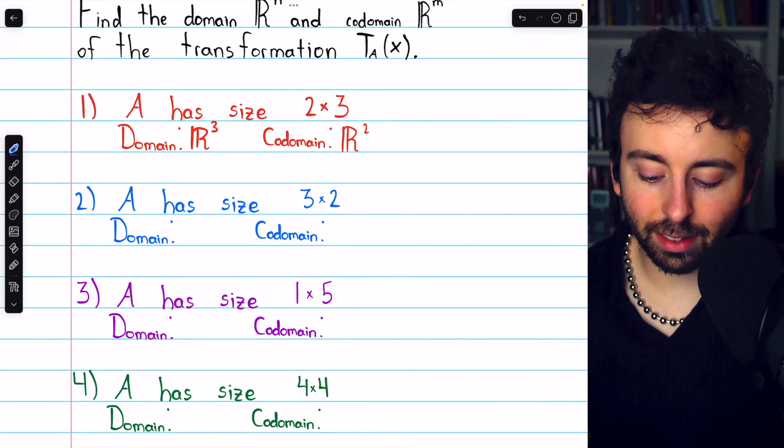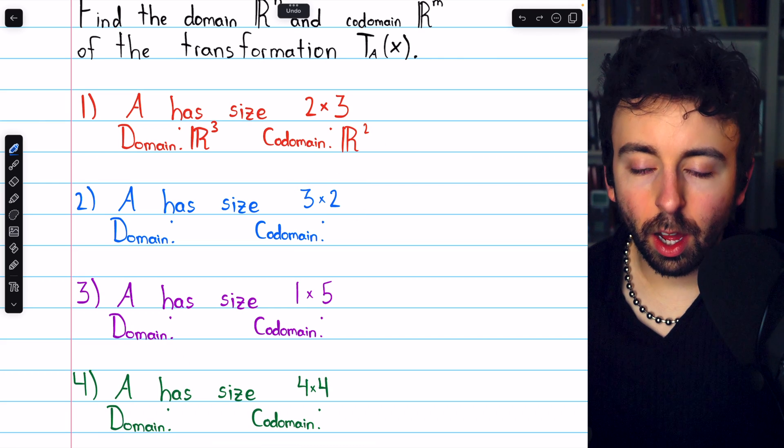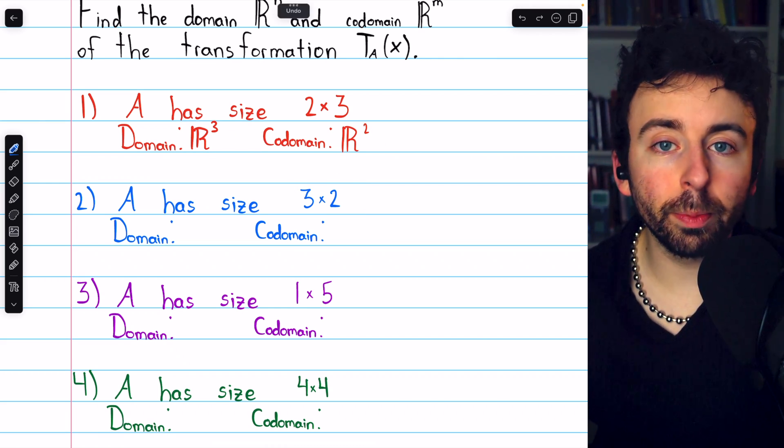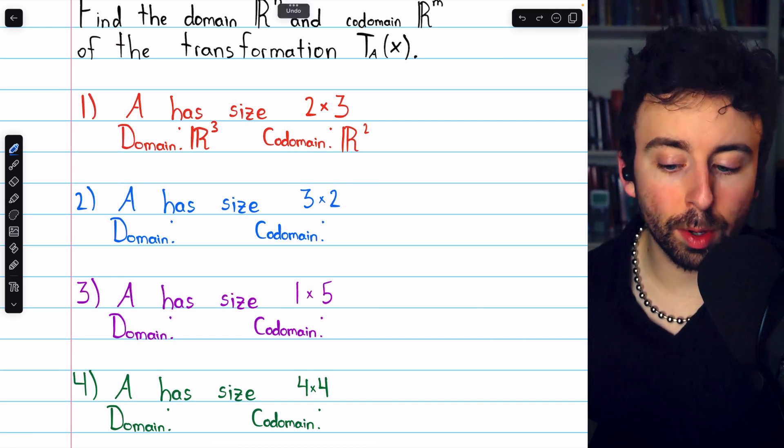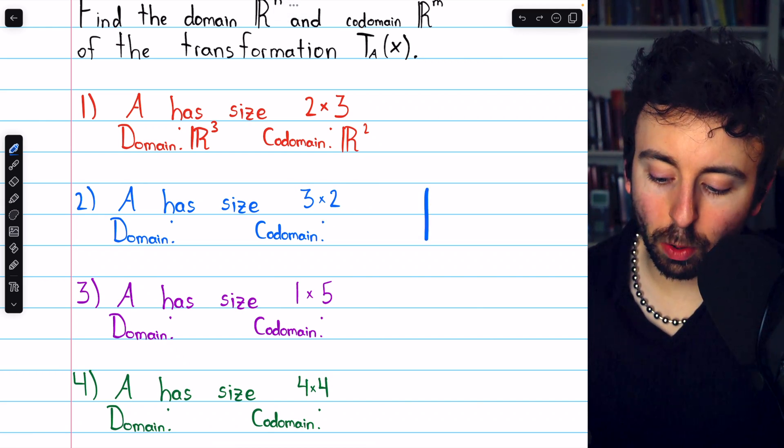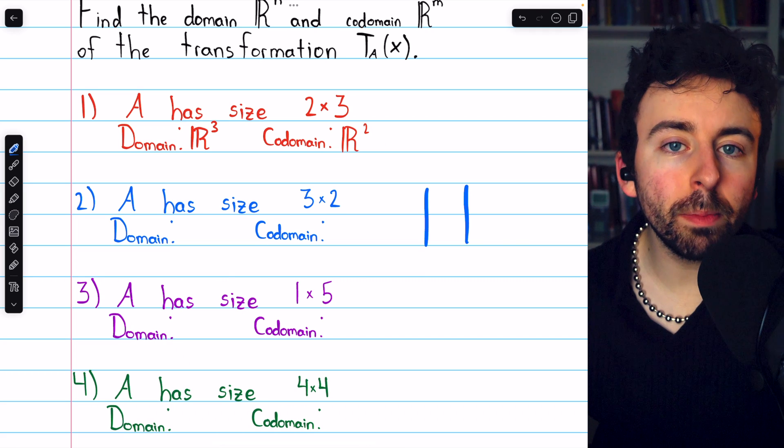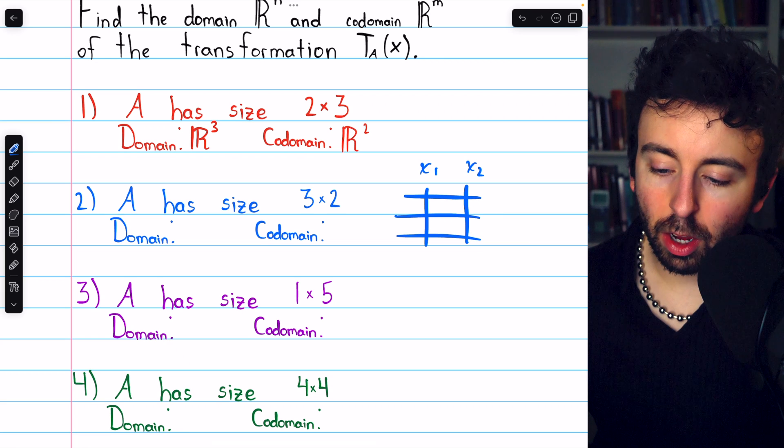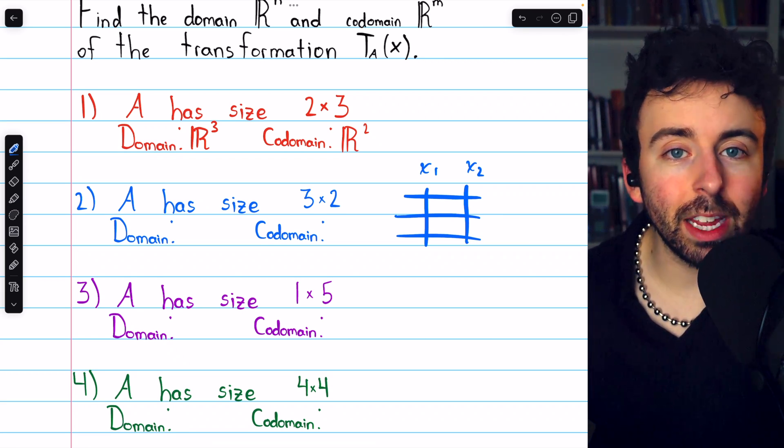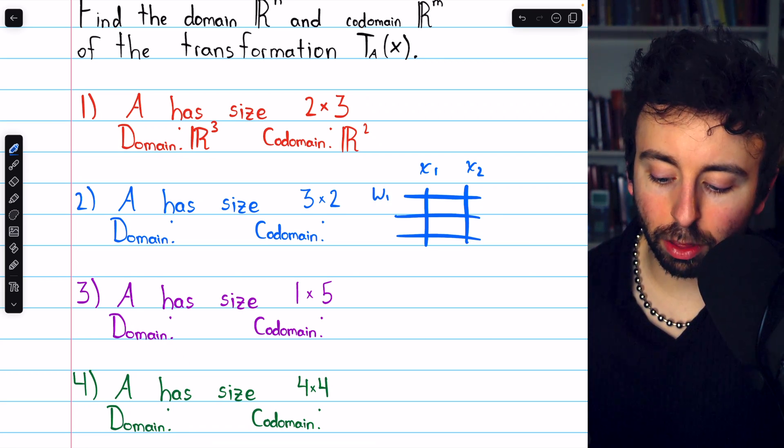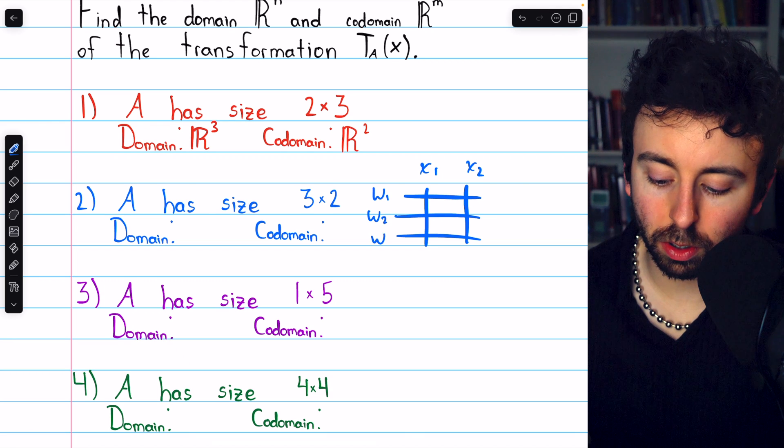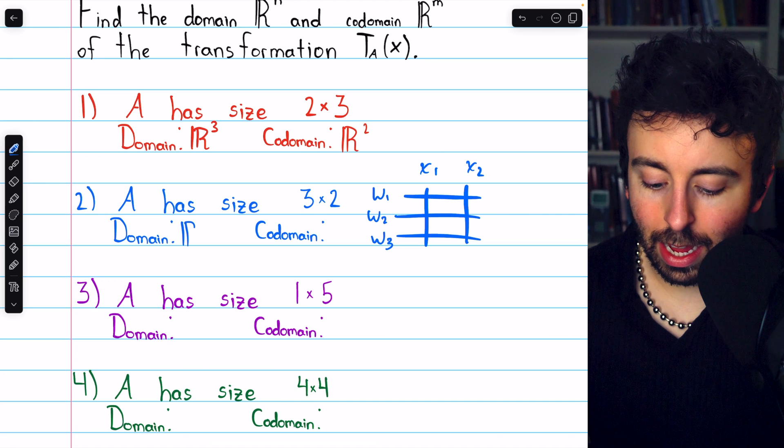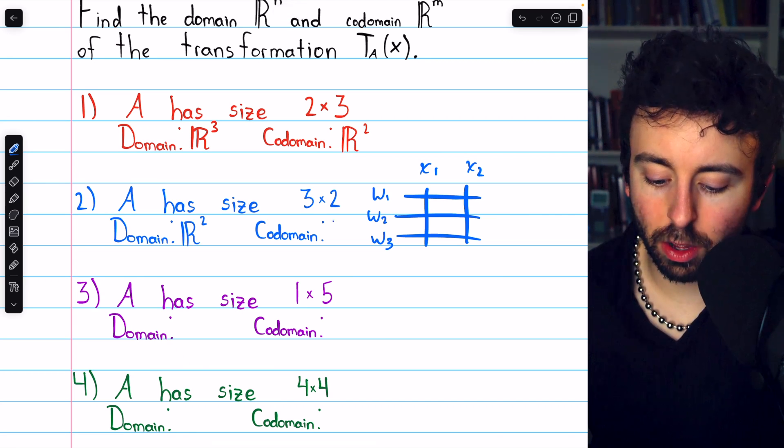Let's try number two. A has size 3×2. Obviously, this is just going to be the reverse of number one, but just to explain it again: for the standard matrix to have a size of 3×2, that means there's going to be a column for each of the input variables, maybe x₁ and x₂. And then each of the three rows will tell us how to combine those input variables to get our three outputs: w₁, w₂, and w₃. So certainly, the domain is R², and the codomain is R³.